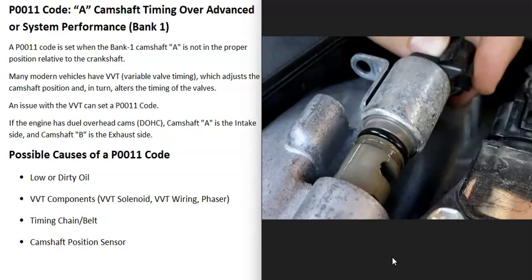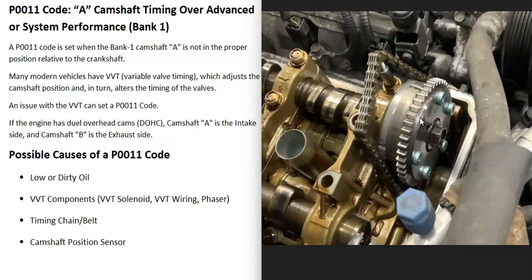This also includes what's called a phaser or actuator. These phasers or actuators are mounted directly in front of the cam and it's what the timing chain or timing belt rides on. Oil flows into this actuator to adjust the timing, and how much oil goes in — or the pressure — is controlled by the solenoid. This is why low or really dirty engine oil can affect this system, because it all works from engine oil.